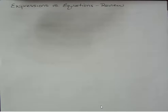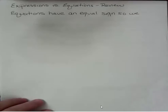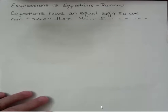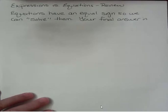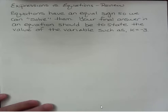Hello, it's Carly McElroy. Today I'm talking about expressions versus equations. This is a review. In the last video we talked about expressions. In this second video we're talking about equations. Equations have an equal sign so we can solve them. Your final answer in an equation should be to state the value of the variable such as k equals negative 3.